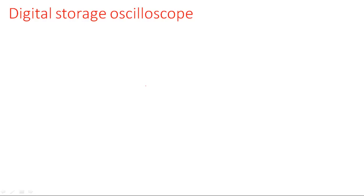In this video, I am going to explain the digital storage oscilloscope and digital readout oscilloscope. The digital storage oscilloscope is quite opposite to the analog storage oscilloscope. In the previous video, I explained the analog storage oscilloscope, where the sinusoidal signal or any type of analog signal is stored in mesh storage.